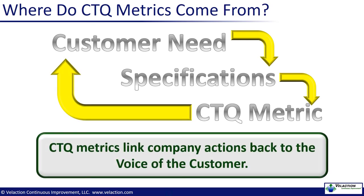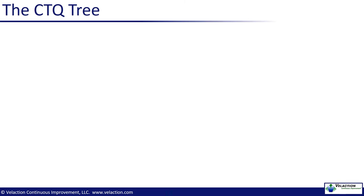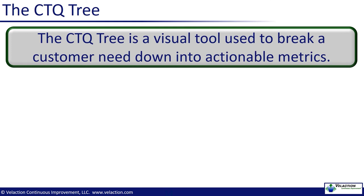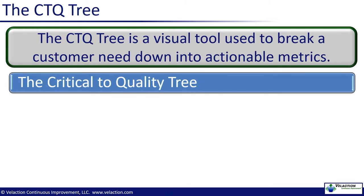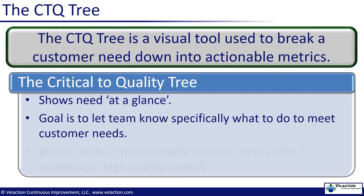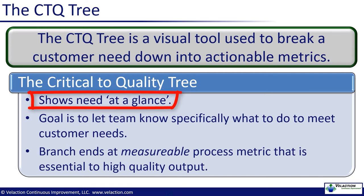One way to make sure you get it right is to look at CTQ metrics as an iterative process. Go back to the customer after the metrics are established and on target, and see if they are happy. That basic flow is often shown as a CTQ tree. This is simply a visual tool to get a better handle on CTQ metrics. There are a few things to keep in mind with CTQ trees. First, it is intended to be an at-a-glance tool. If it gets extensive or complicated, it really isn't focused on critical issues.